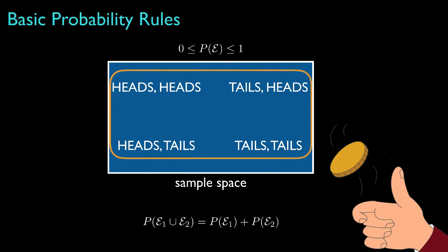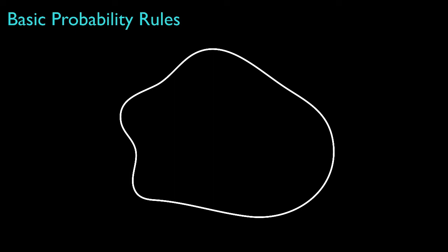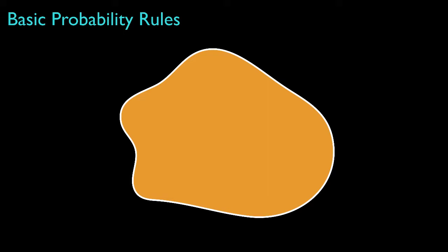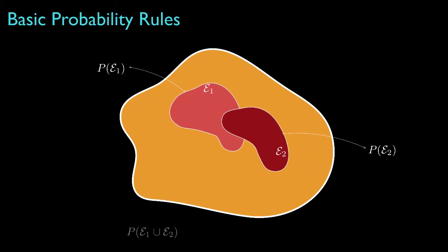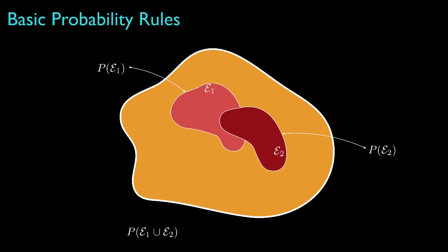Finally, the event that includes all possible outcomes must always have a probability equal to 1. In general, a probability model begins with some sample space made up of all possible outcomes. Subsets of the sample space are called events, and we associate probabilities with those events. The probability we associate with the union of two disjoint events is the sum of their probabilities. But if the two events are not disjoint, then we use a new rule to determine the probability of their union.